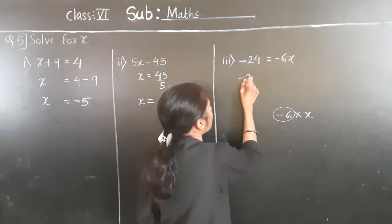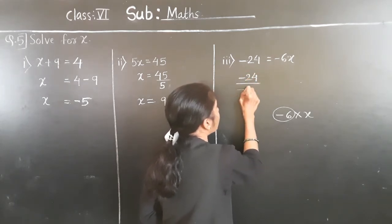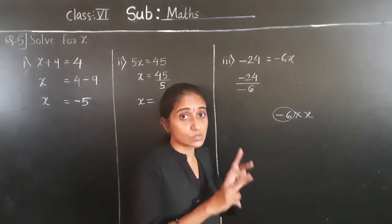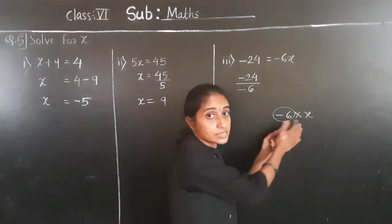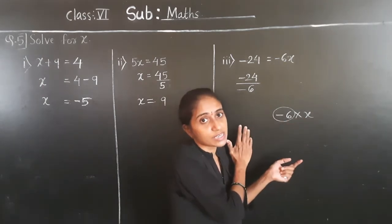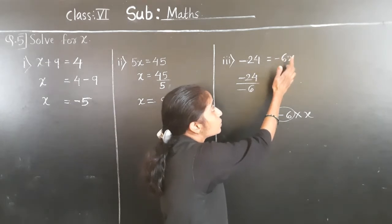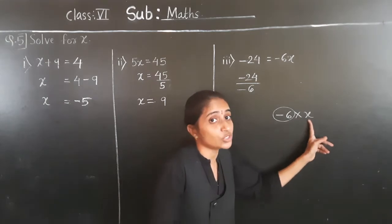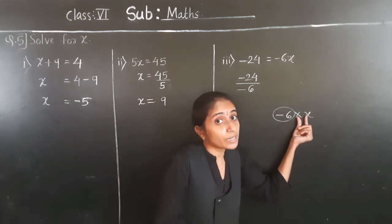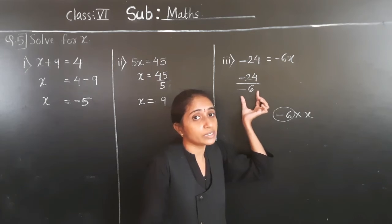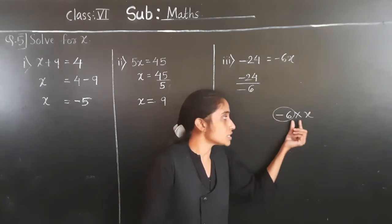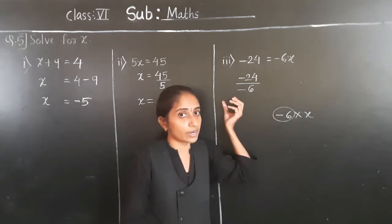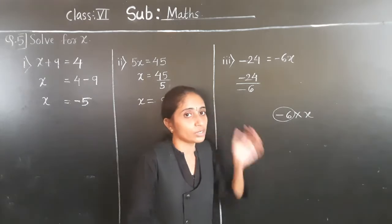So we get minus 24 divided by minus 6. When the operation between them is plus or minus, then we can change the sign — but here the operation is multiplication. When it is multiplication and we transfer, it becomes division. So we divide: minus 24 divided by minus 6.